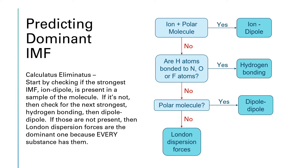Looking at this flow chart, the first thing we want to identify is the ion-dipole force. The ion-dipole force is present if you have an ion plus a polar molecule. The ion will stick out like a sore thumb because it will be a charged particle — something with a plus or minus sign — or it'll be listed as an ionic compound, which is a metal plus a nonmetal, or you identify a polyatomic ion like nitrate or phosphate.